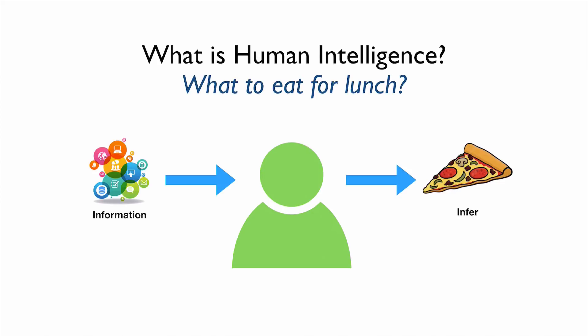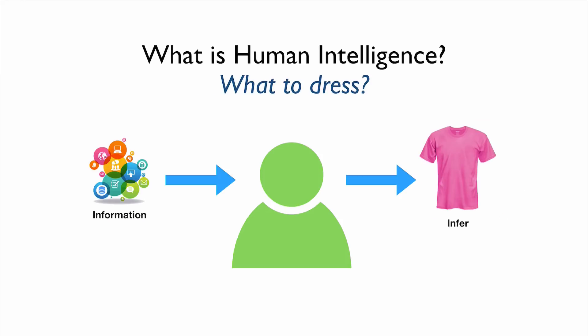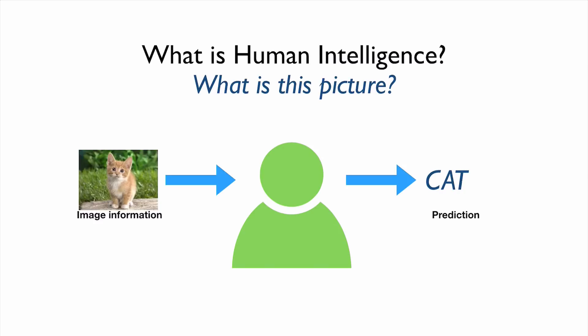So this is a typical way to make a decision, and we usually say this one is inferring using some information. How about what to dress? Same. We are going to use certain information based on information that we think and then we decide. Also, we can provide some images like this, and we can ask what's inside of this picture. And then using this image information as input, we can say, oh, it's a cat. So this process can be prediction or inferring.